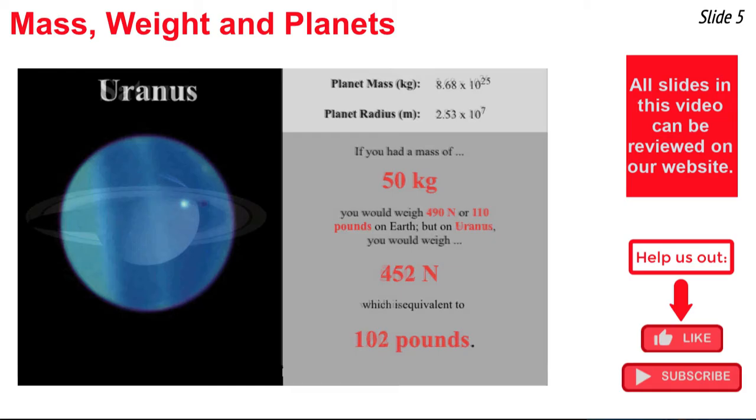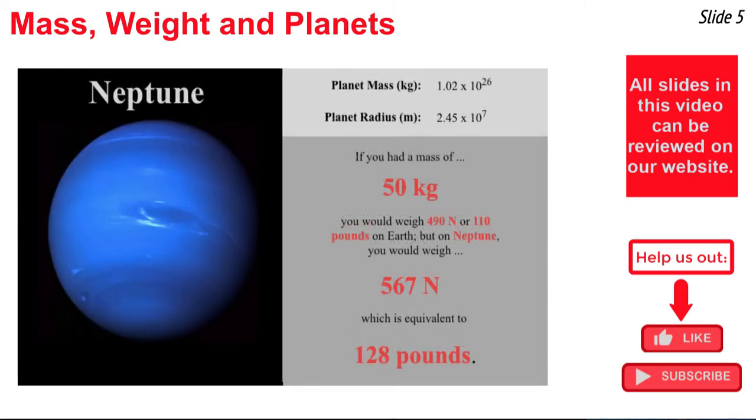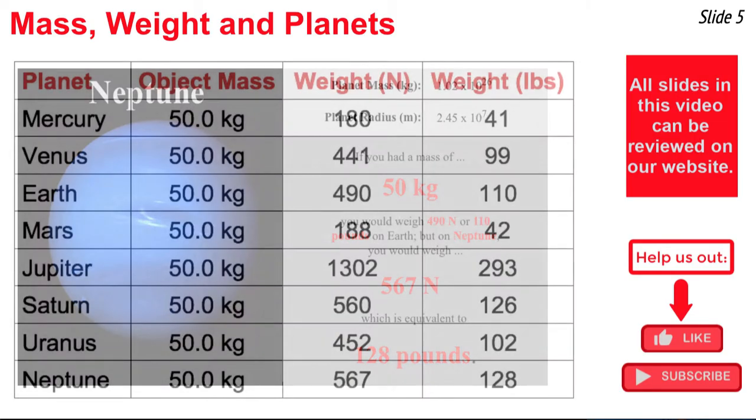Put the person on Saturn, 560 Newtons, and then go to Uranus, 452 Newtons, and finally Neptune, 567 Newtons.